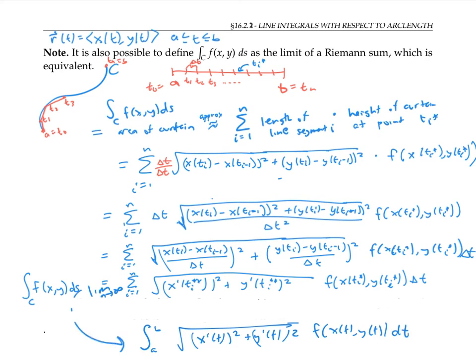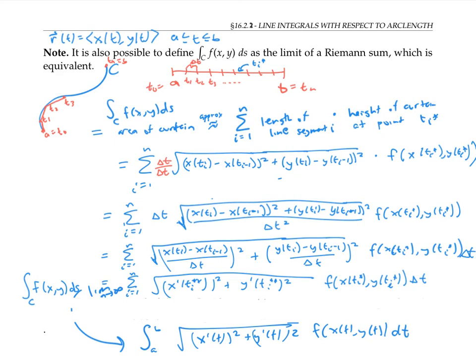So the Riemann sum definition gives the same definition as our intuitive definition before. In this video, we wrote the area of the curtain in terms of a limit of a Riemann sum and used that to derive this formula for the line integral with respect to arc length.